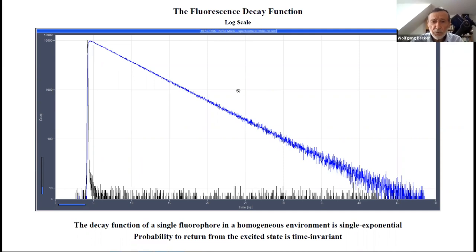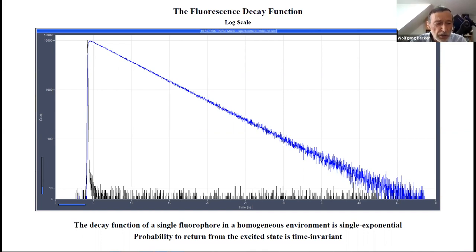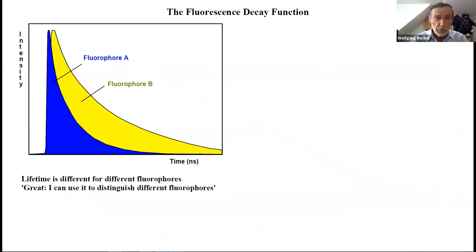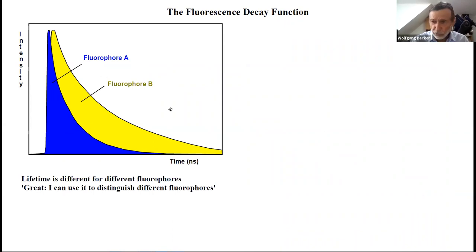This is important because in practical cases it is not a single exponential. We have to remember what it means when the fluorescence decay curve is multi-exponential. The fluorescence decay curves—the blue one and the yellow one—are different for different fluorophores. Everyone knows this and has it in mind when talking about fluorescence decay functions. People not very familiar with fluorescence decay functions say: great, I can use the lifetime to distinguish different fluorophores.